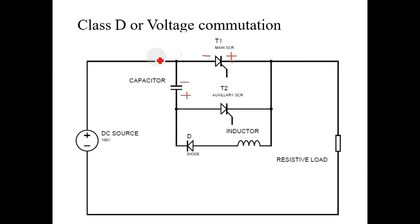Positive plate of a supply, negative plate of a capacitor that is upper plate, positive plate of a capacitor through auxiliary thyristor, once again through resistive load and back to supply.